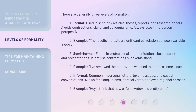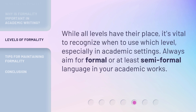The third level is informal, common in personal letters, text messages, and casual conversations. It allows for slang, idioms, phrasal verbs, and even regional phrases. For example: "Hey, I think that new cafe downtown is pretty cool." While all levels have their place, it's vital to recognize when to use which level, especially in academic settings. Always aim for formal or at least semi-formal language in your academic works.